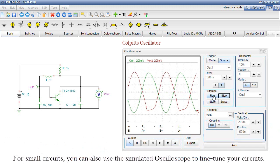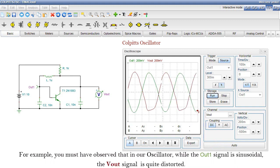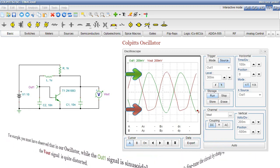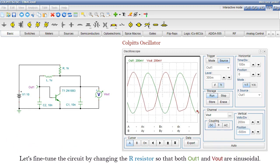For small circuits, you can also use the simulated oscilloscope to fine-tune your circuits. For example, you must have observed that in our oscillator, while the OUT1 signal is sinusoidal, the VOUT signal is quite distorted. Let's fine-tune the circuit by changing the R resistor so that both OUT1 and VOUT are sinusoidal.